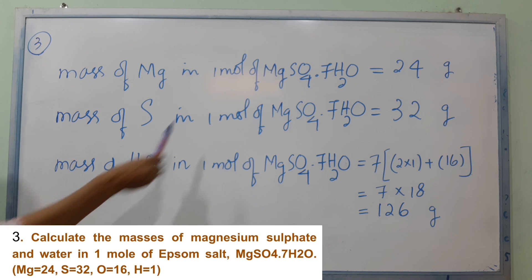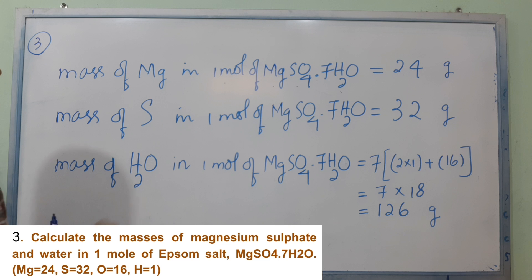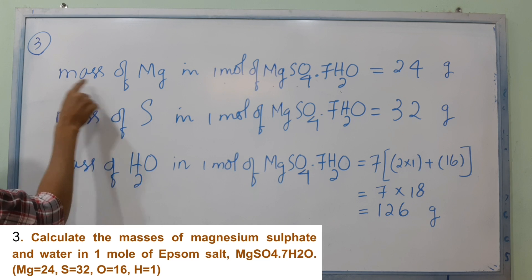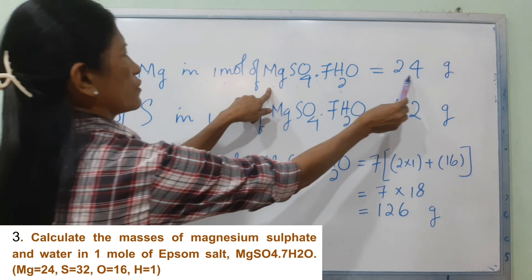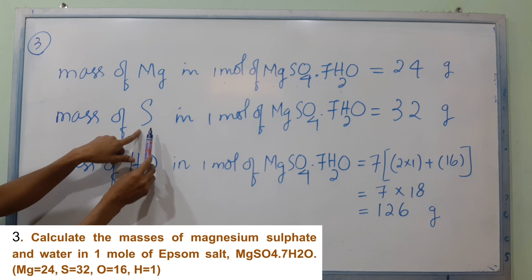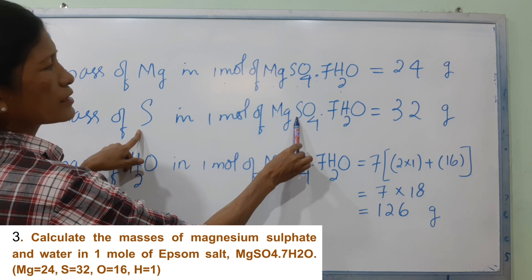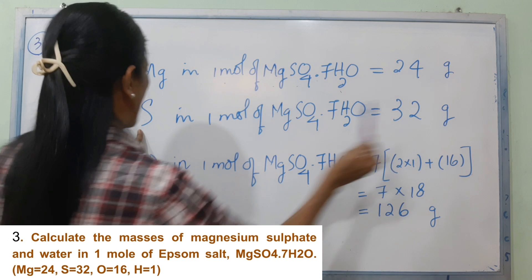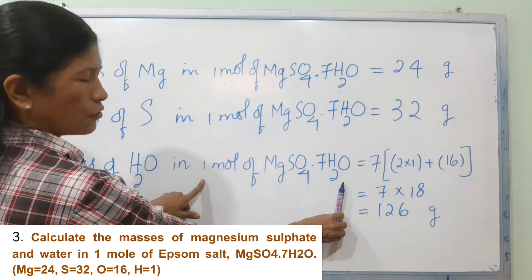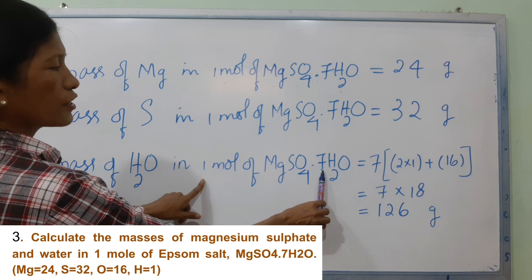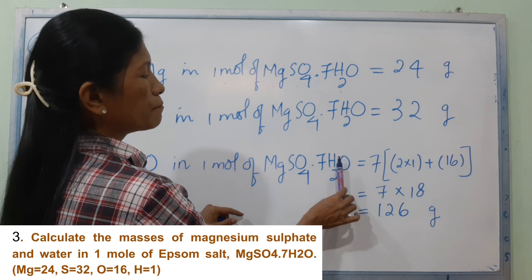Review question number 3: For MgSO4·7H2O, we work with this compound. The compound is also known as Epsom salt. To find the molar mass of MgSO4·7H2O, we calculate 7 times the molar mass of H2O and add the mass contributions of magnesium, sulfur, and oxygen.